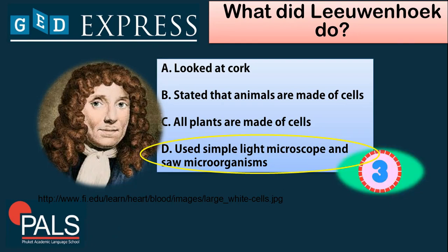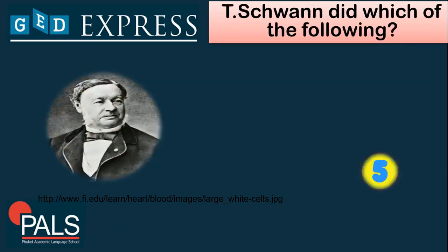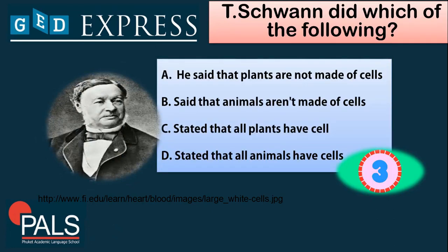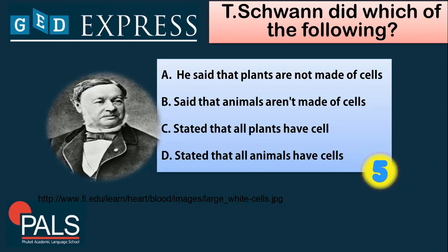Next question: Theodor Schwann did which of the following? A. He said that plants are not made of cells. B. Said that animals aren't made of cells. C. Stated that all plants have cells. D. Stated that all animals have cells. The right answer is letter D — stated that all animals have cells.